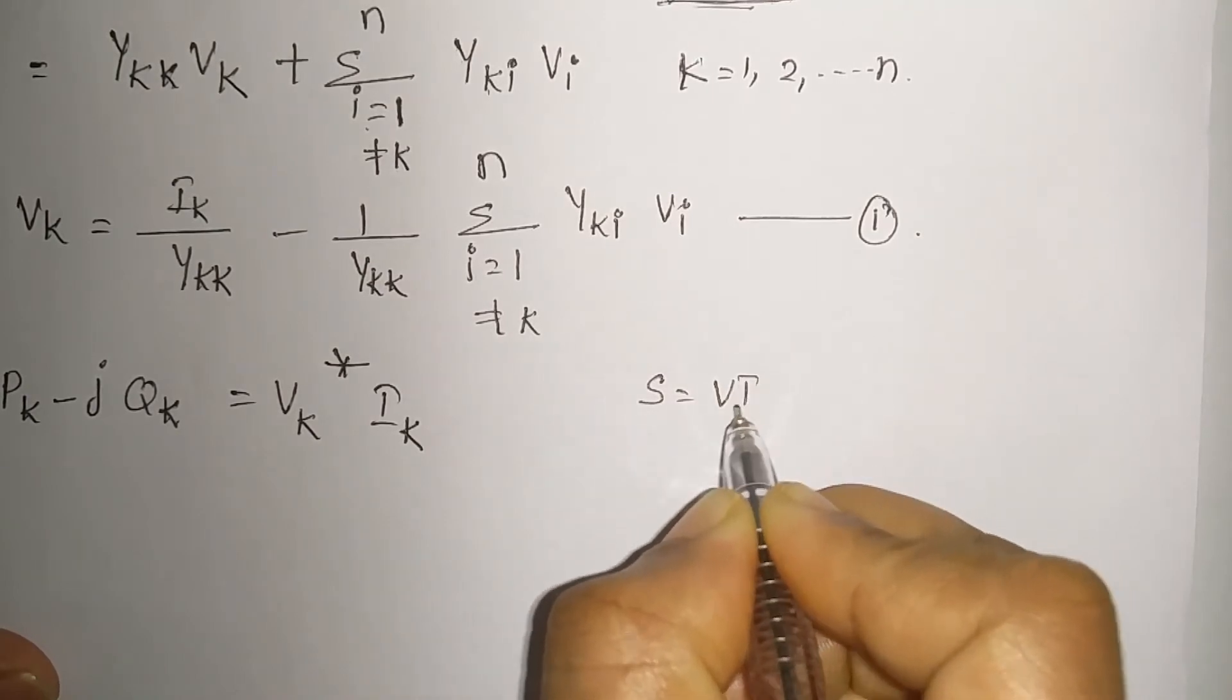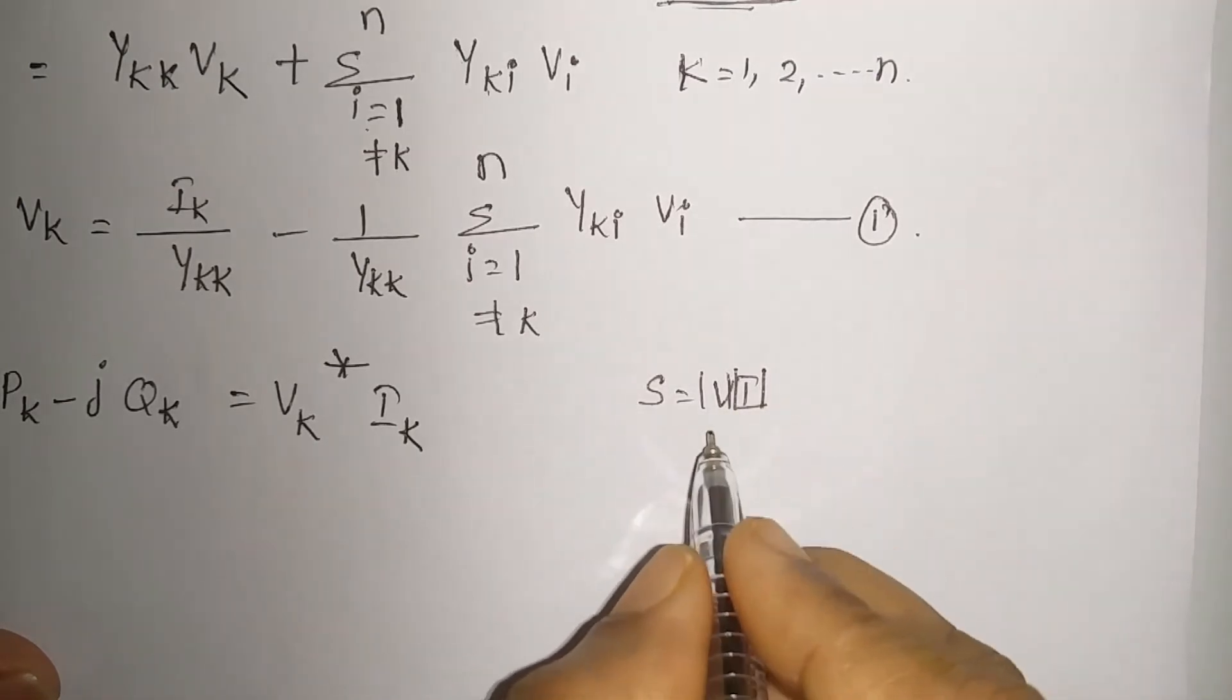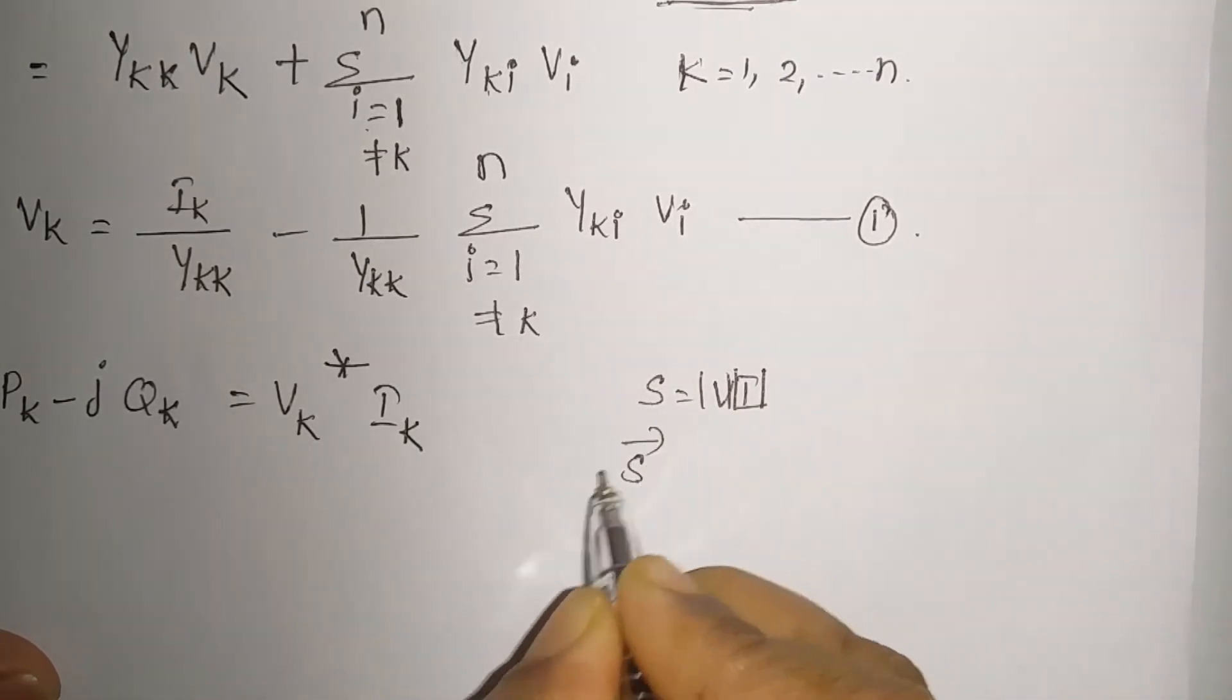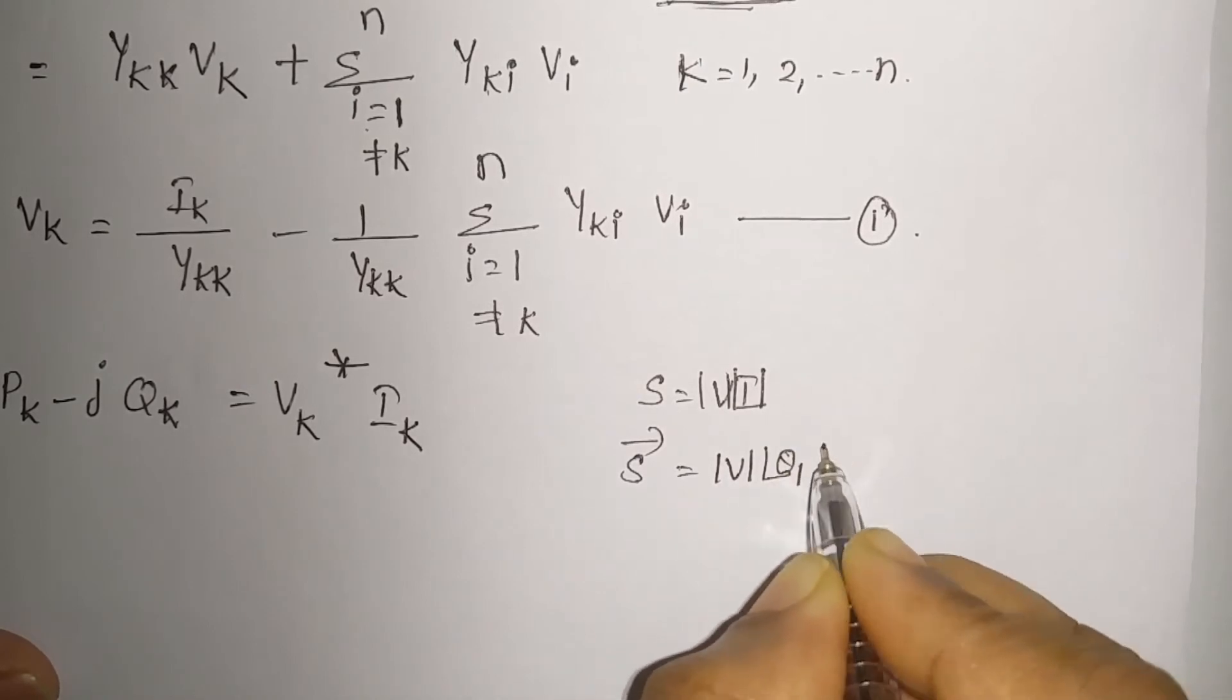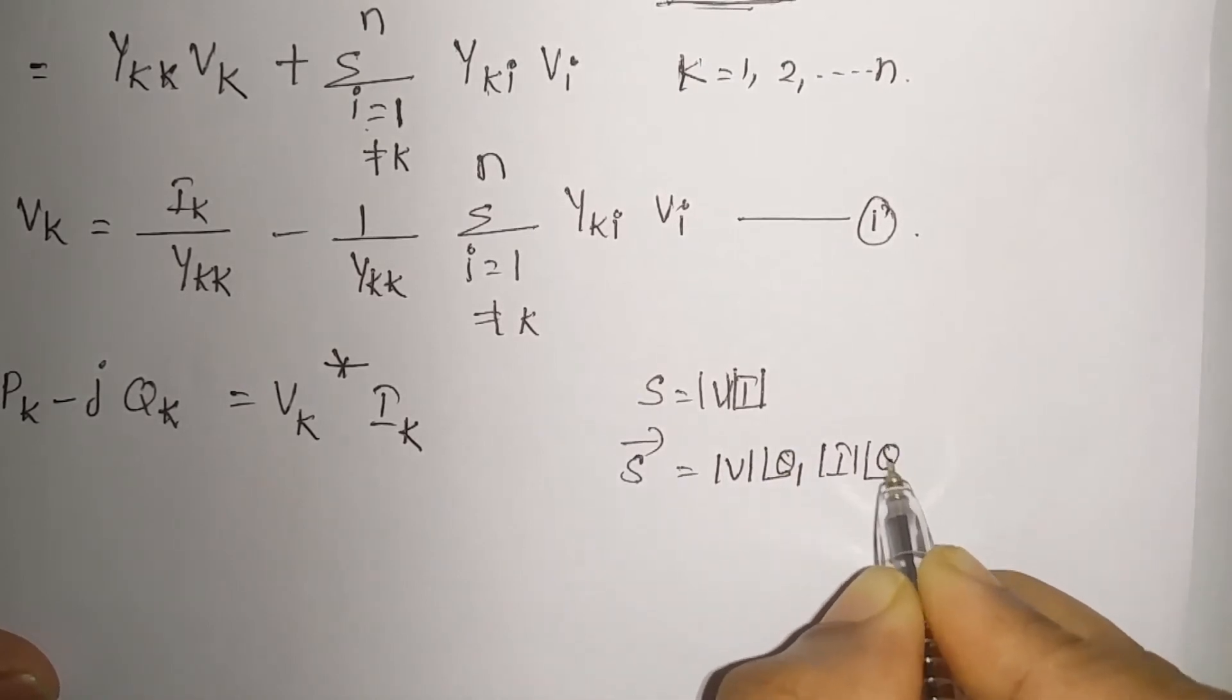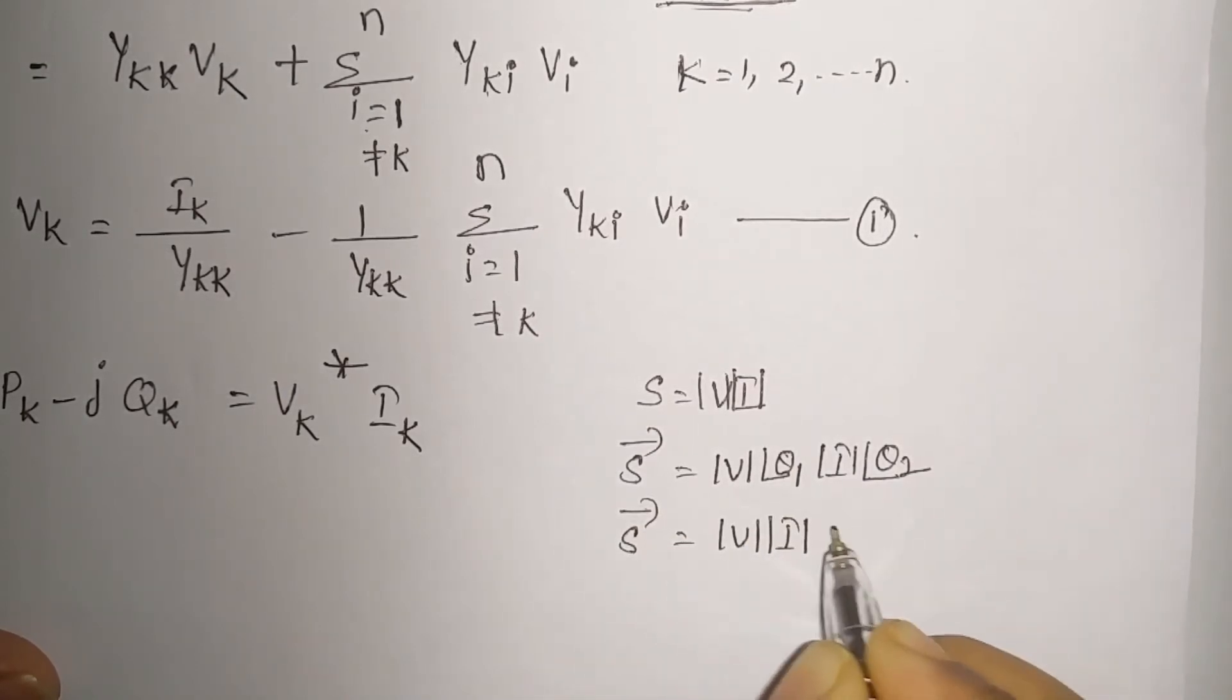S is equal to what? VI, magnitude-wise. Now if I want to play some vector, then it will be V at an angle theta 1, magnitude of I at an angle theta 2. So what should be this S? This is a product of V and I, and this is the angle between voltage and current.